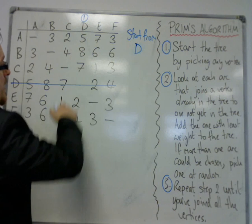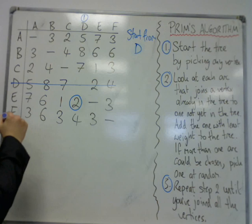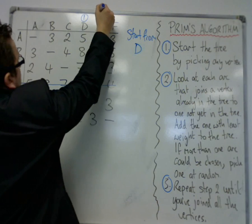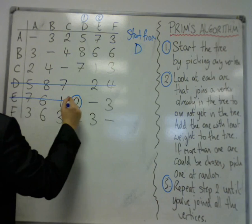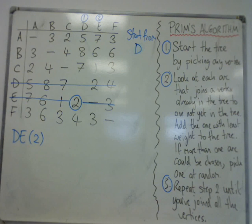And I look down column D, and the shortest edge is the number two there, so D to E. So that connects E. Delete the rest of the row, and I make note of it down here, so I've connected D to E firstly.